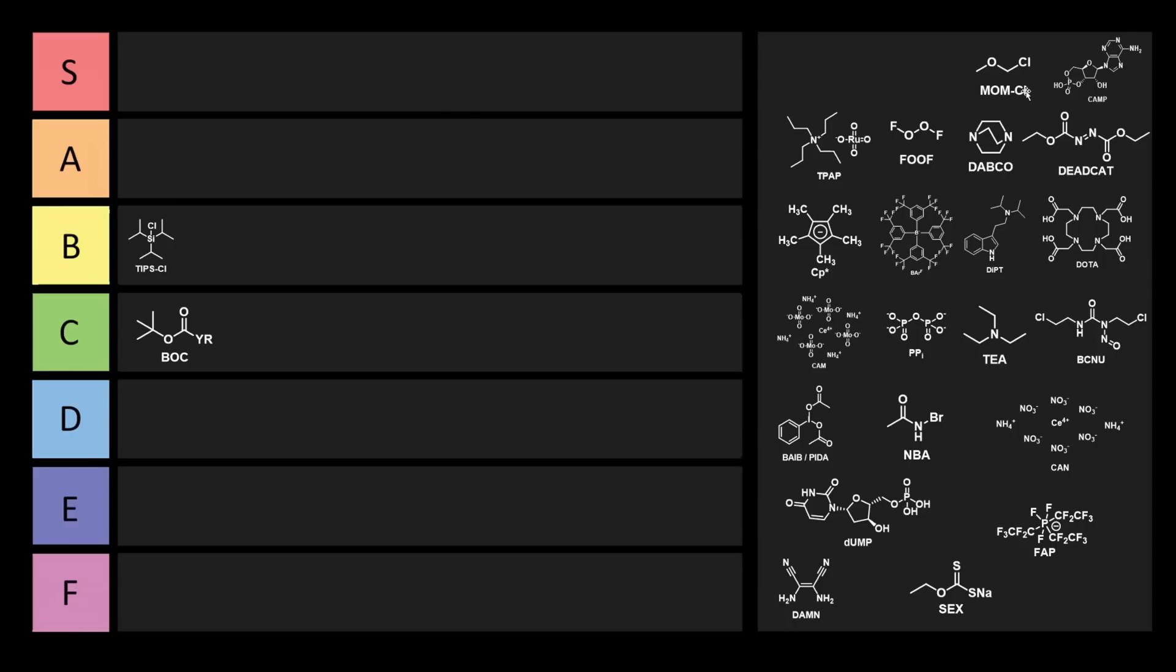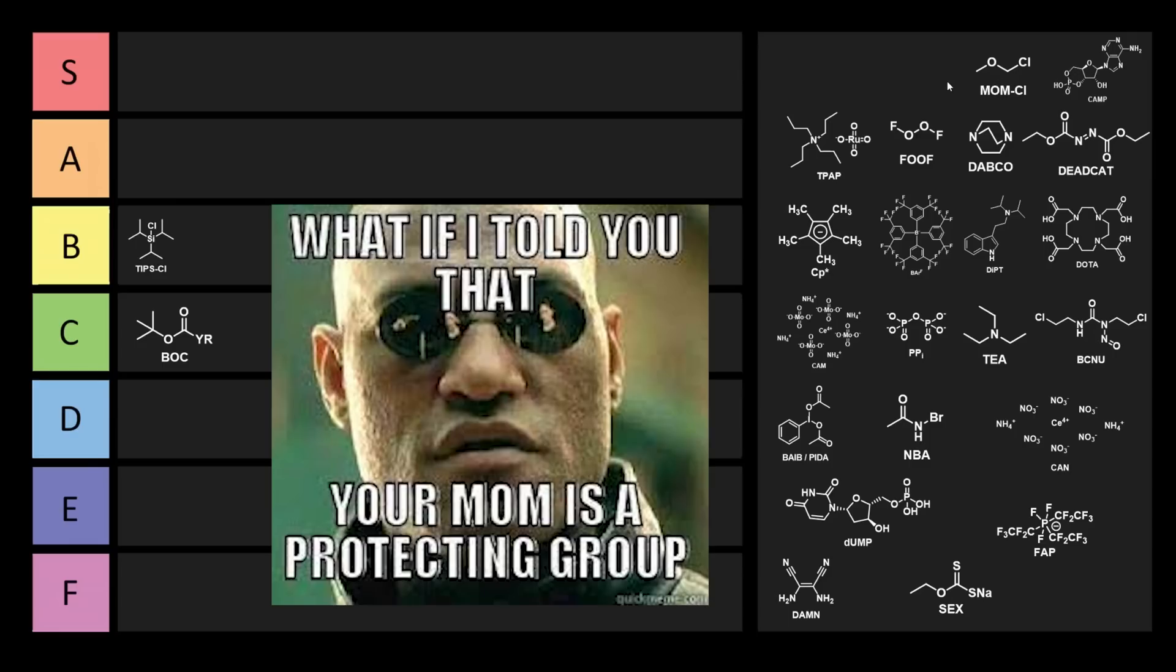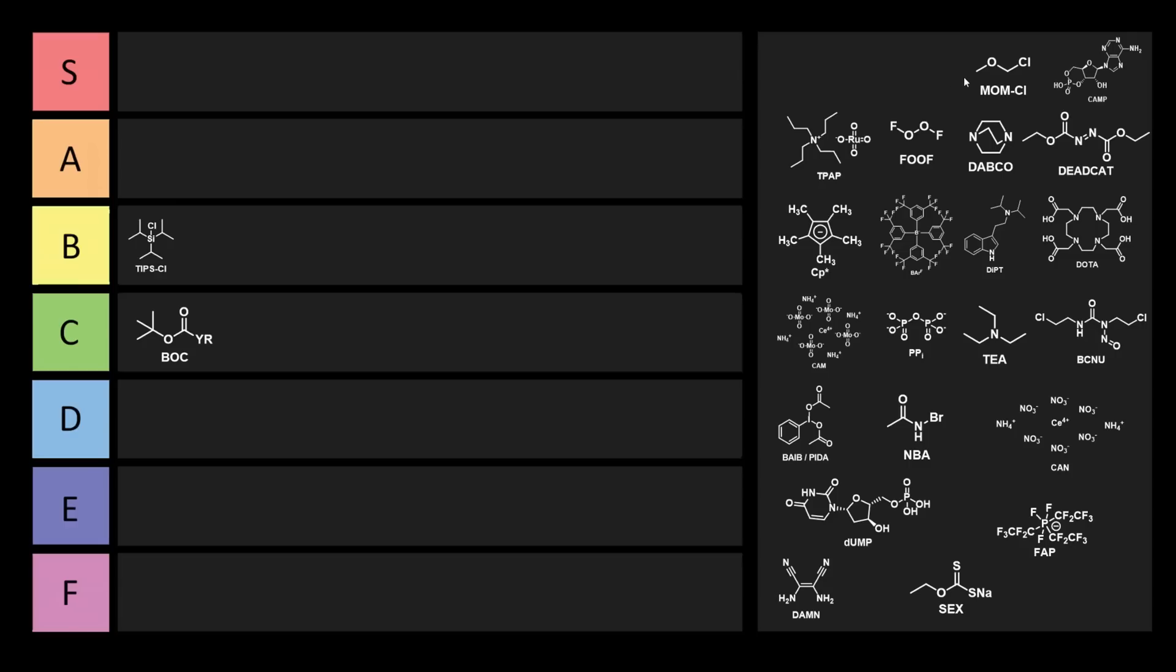Next we have MOM chloride. This stands for methoxymethyl chloride, and you might be thinking, mom, can I have a chloride? Mom says we have chloride at home, and this is the chloride we have at home. This is another protecting group reagent that's kind of annoying to install and horrendously toxic. It's listed as a group one carcinogen by the International Agency for Research on Cancer, which means it's confirmed to be carcinogenic to humans. It's almost as toxic as your mom. Why don't we put MOM chloride into E tier?